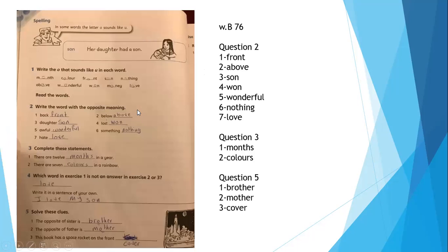So, let's move to workbook, page 76. Here, just add O to the word. Month, color, front, son, nothing, above, wonderful, won, money, and love.